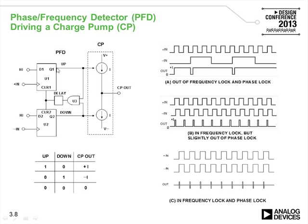The outputs drive a current source and a current sink. An output at Q1 causes a current source to be turned on and current to be injected into the loop filter, whereas a one at the other output causes a current sink to be turned on and current to be pulled from the loop filter. There is feedback from the up and down pins at the output of the two D-type flip-flops, routed to an AND gate, then through a delay element to the clear pins of the D-type flip-flops.